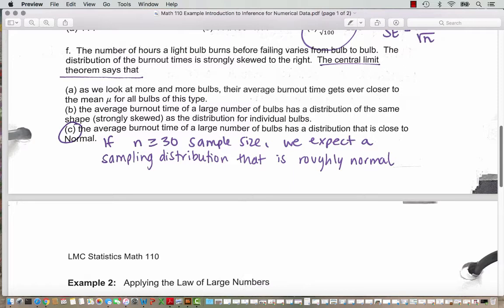It says as we look at more and more bulbs, our average burnout time gets ever closer to the mean. So that would be the law of large numbers, not the central limit theorem.